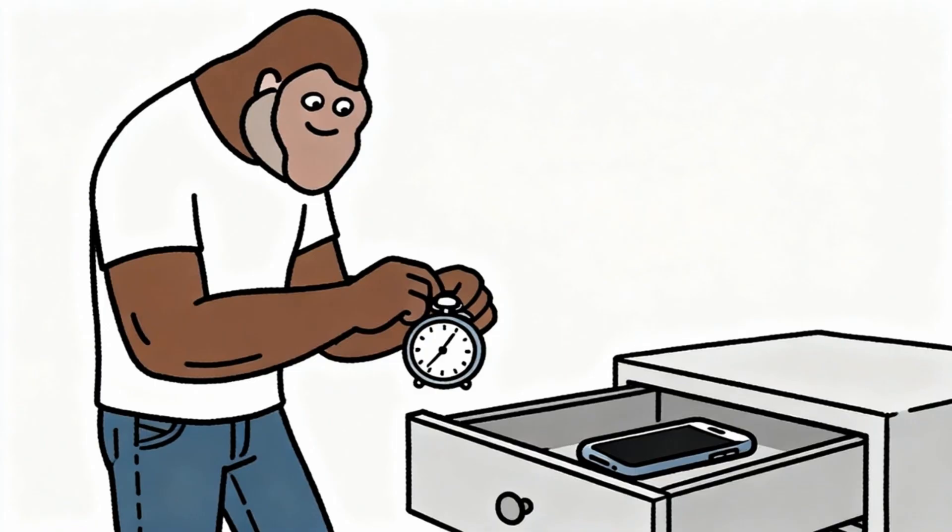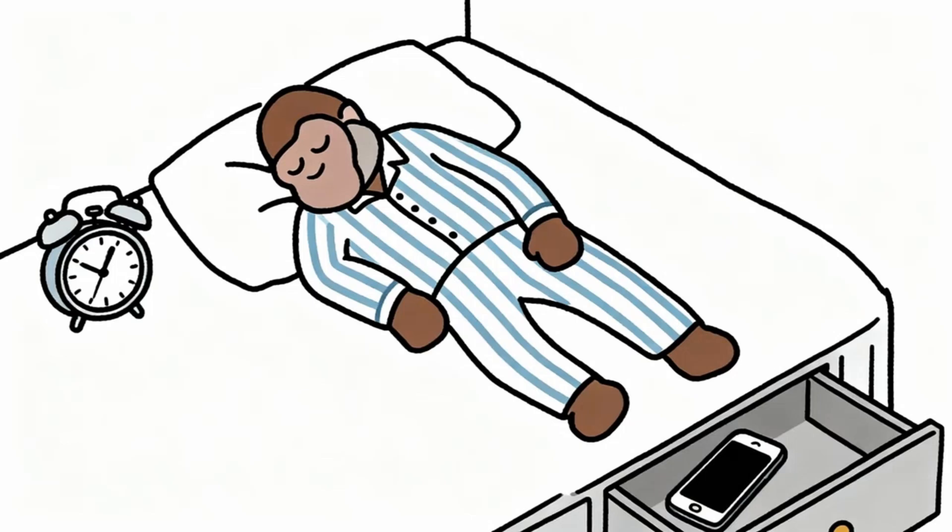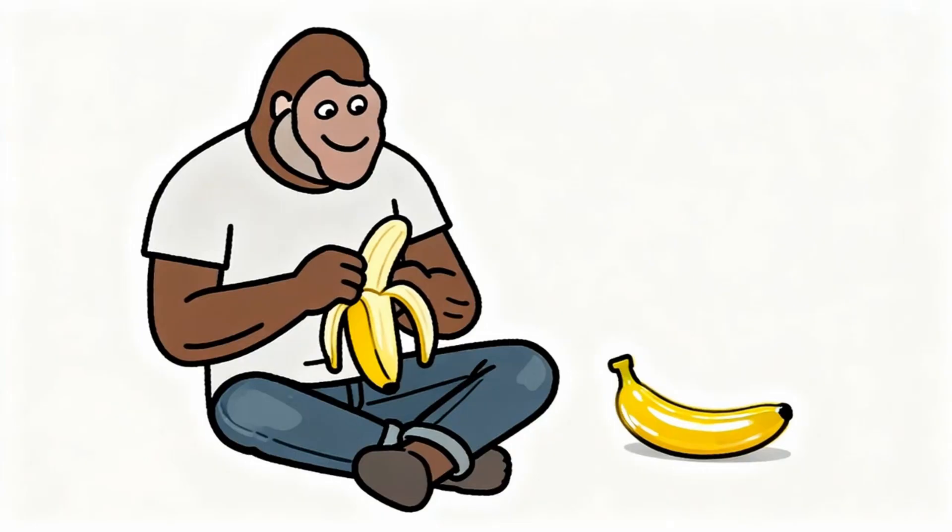Successful escape requires understanding that temporary discomfort of withdrawal leads to permanent improvement in life quality. The anxiety and boredom felt during dopamine fasting are not permanent states. They are brain adjusting back to natural functioning after artificial overstimulation. Recovery timeline varies between individual monkeys, but most notice significant improvements within few weeks of reducing artificial dopamine exposure. Sleep improves first as overstimulated brain learns to calm down naturally. Focus and attention span increase gradually as scattered thinking patterns reorganize themselves. Most importantly, monkey rediscovers ability to feel genuine satisfaction from meaningful activities.